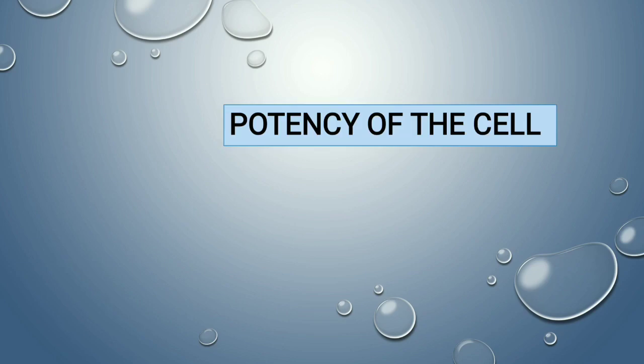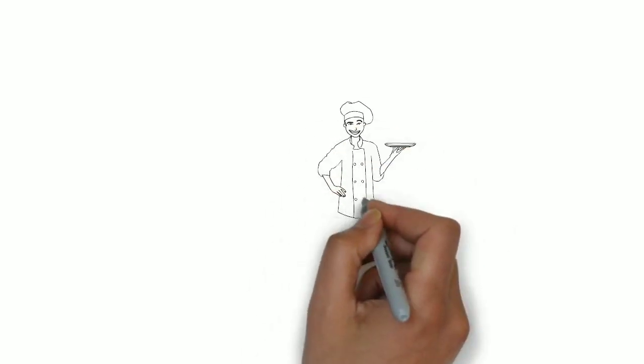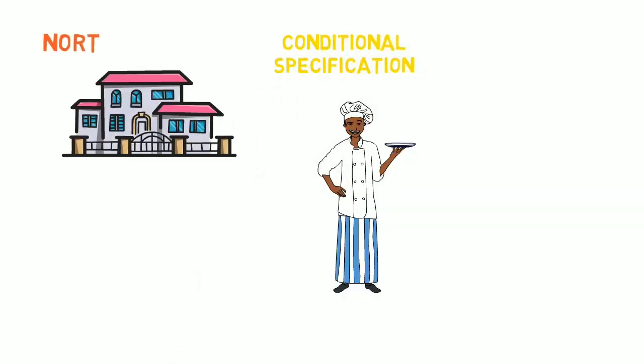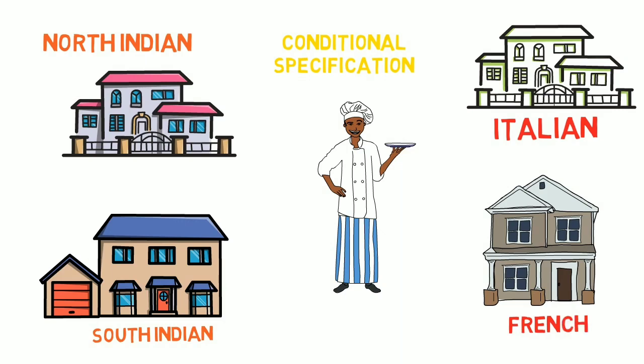Now there are two things: the potency of the cell and the normal fate of the cell. Remember the chef or cook example. The cook's potency allows them to make North Indian, South Indian, and Italian food — that is the full potency. But depending on the conditions and where the cook is placed, the fate is limited to a particular cuisine. The potency is more than the actual fate realized.